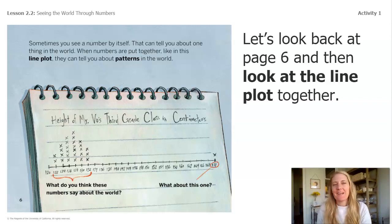Welcome back! Let's look back at page six and then look at the line plot together. It says here in the book, sometimes you see a number by itself. That can tell you about one thing in the world.